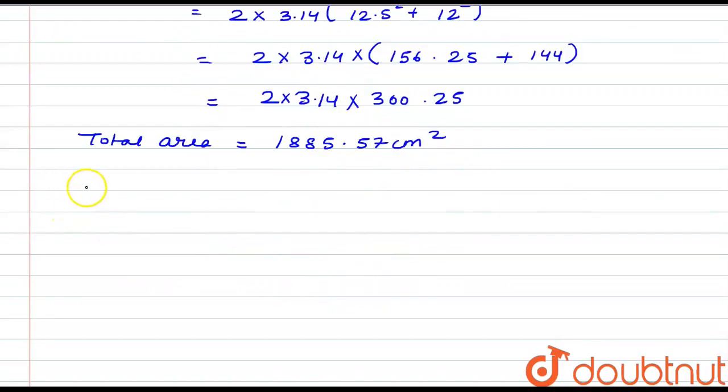Now it is given that the cost of painting 1 cm² is 7 paise, or we can write this as rupees 0.07.